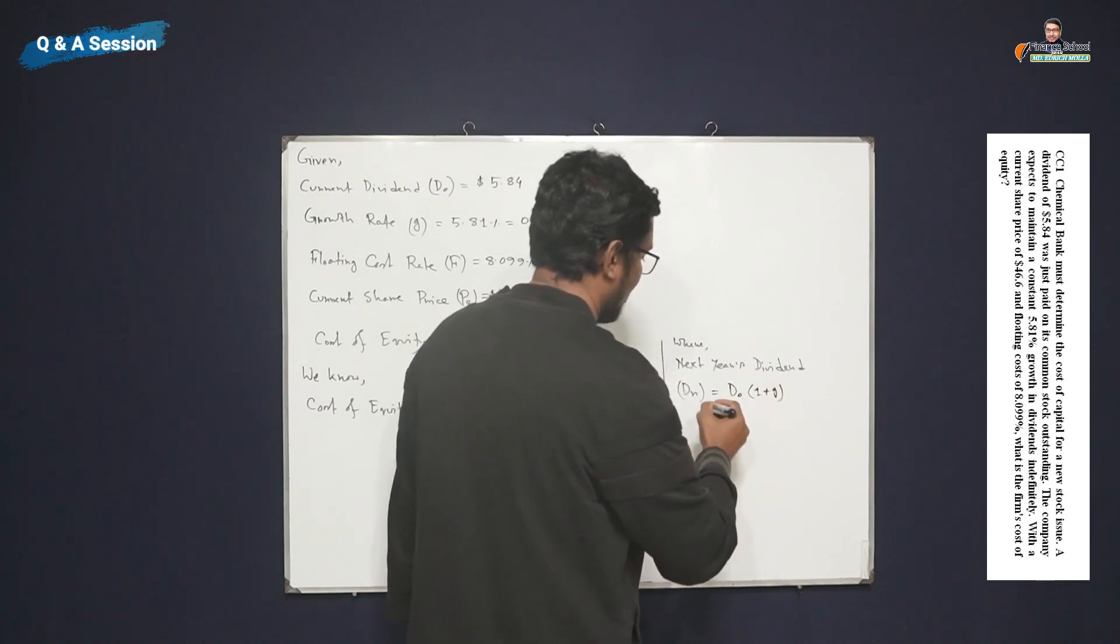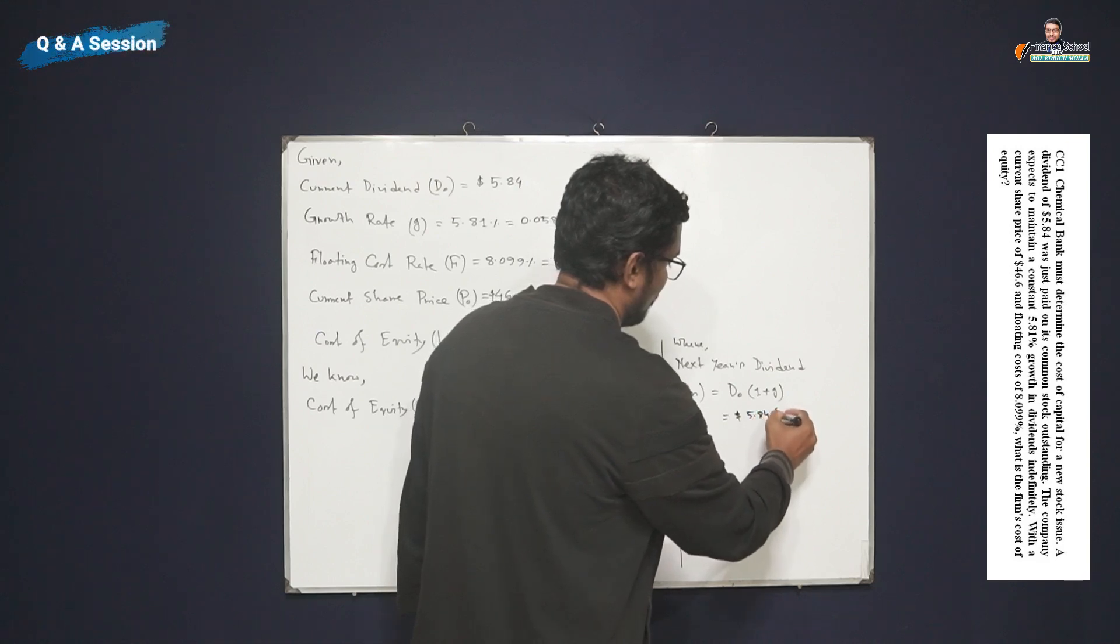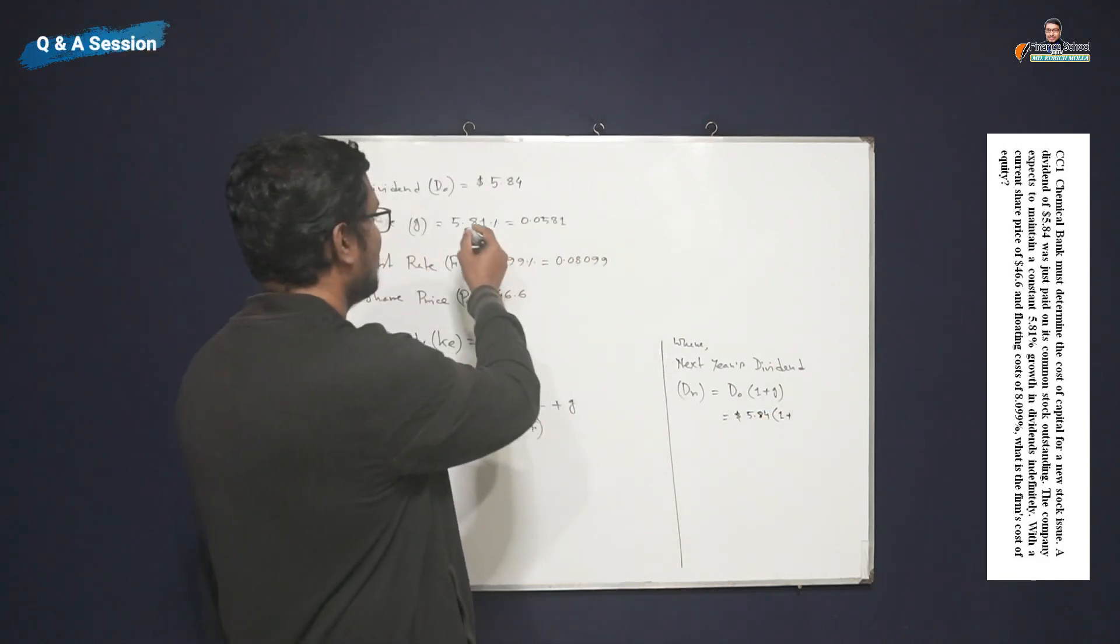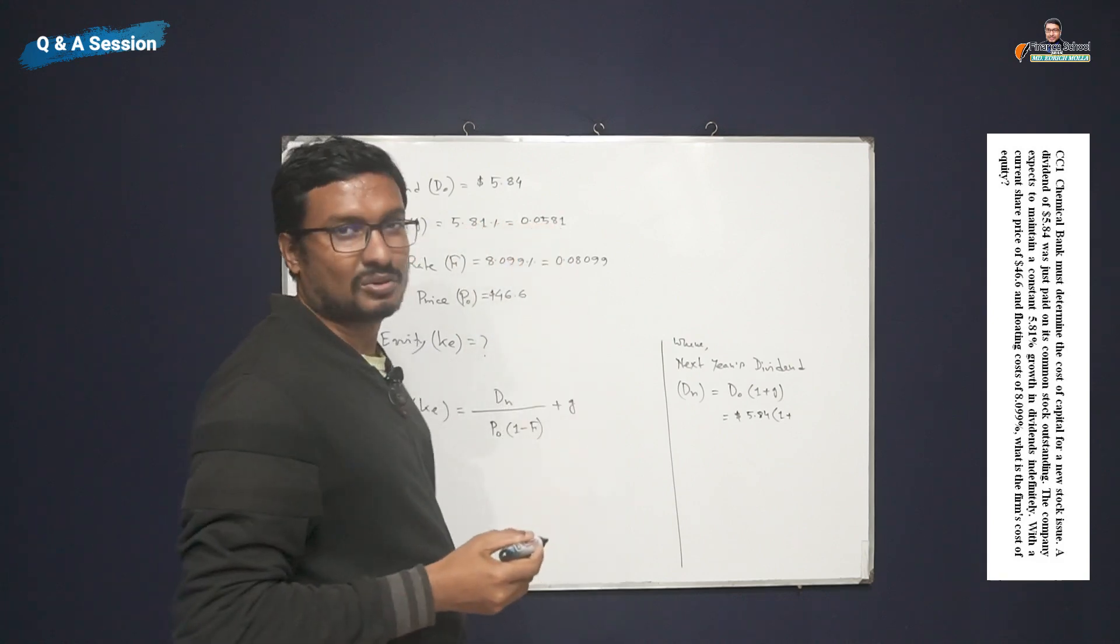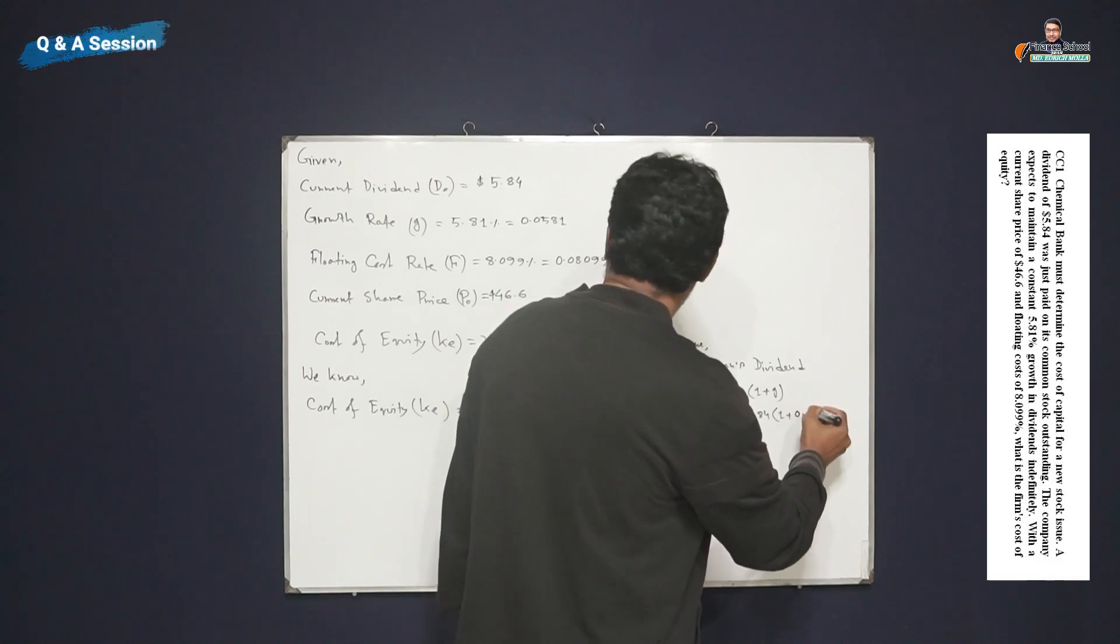So here D₁, as you can see, equals 5.84 times (1 + the value of growth rate is 0.0581), so we can write 0.0581.